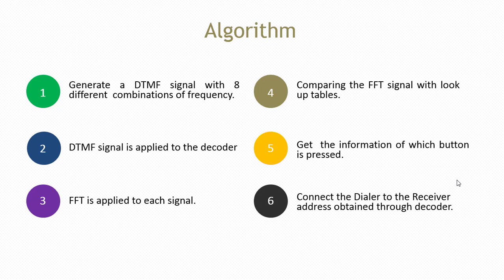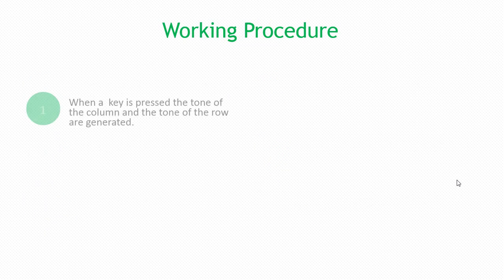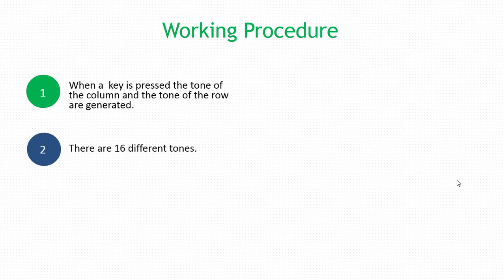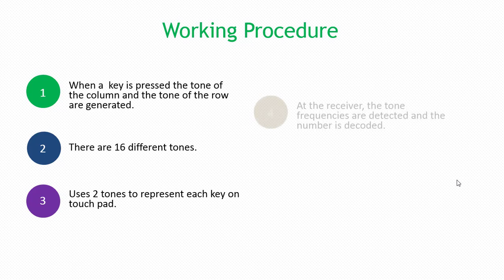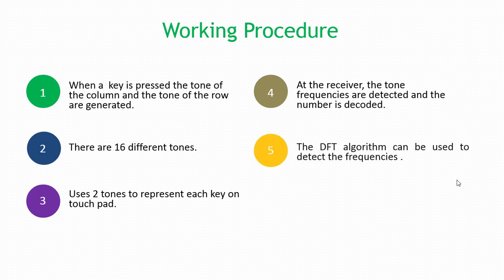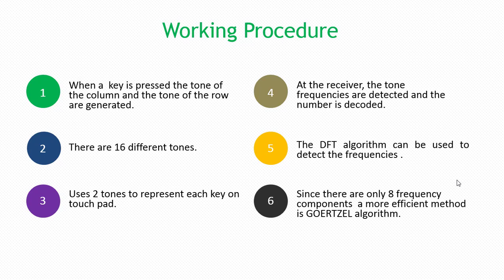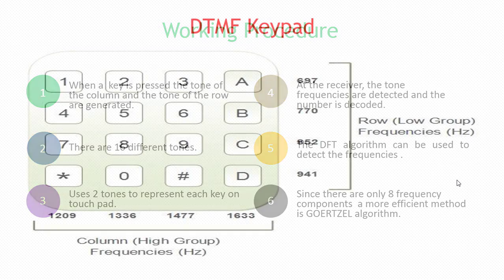When a key is pressed, the tone of the column and the tone of the row are generated. There are 16 different tones that use two tones to represent each key on the touchpad. At the receiver, the tone frequencies are detected and the number is decoded. The DFT algorithm can be used to detect the frequencies. Since there are only eight frequency components, a more efficient method is the Goertzel algorithm.